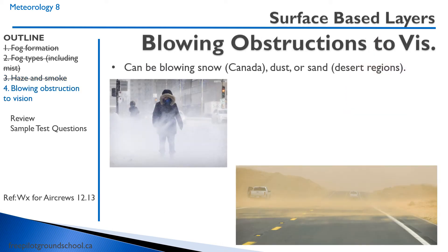We can have blowing obstructions to visibility, such as blowing snow in Canada, or in desert regions, dust or sand that will obstruct the visibility. Typically, blowing obstructions are not very thick layers. You might have very good visibility above the blowing snow — it might be clear above — but 20 feet above the surface, the visibility is very low, let's say half a mile in blowing snow, even though the weather is quite nice.